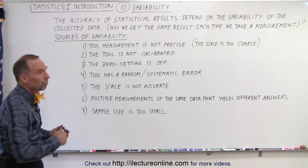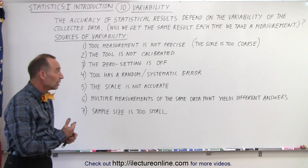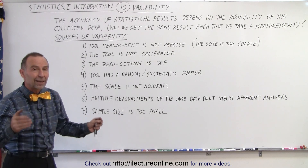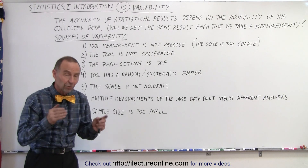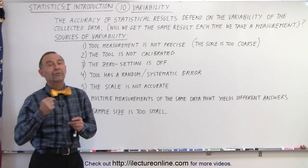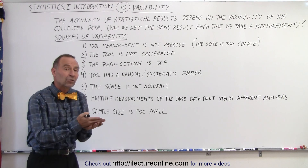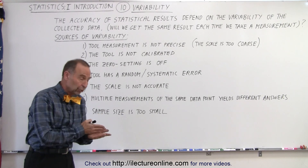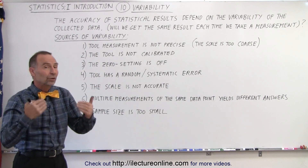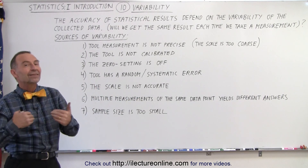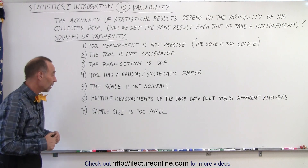How about if you take multiple measurements? One of the ways to determine if there's a lot of variability is to take many measurements of the same data point. If each time you get the very same result, then there's very little variability. But if multiple measurements by the same person — or three different people taking the same measurement — yield different values, then it depends on the operator, and that makes a difference as well.